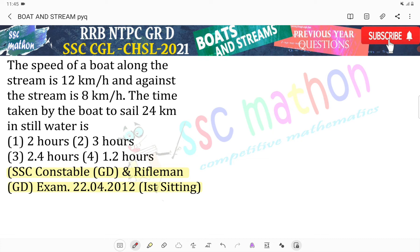The speed of a boat along the stream is 12 km per hour and against the stream is 8 km per hour. The time taken by the boat to sail 24 km in still water is...